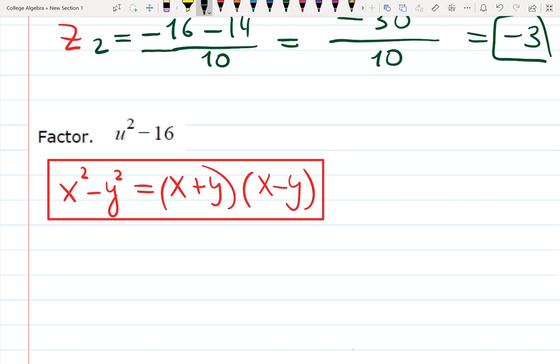So, in this case, instead of x, I have u squared, and instead of y, I have 4 squared. So, it's u squared minus 4 squared. Then, you will write down this as u plus 4 times u minus 4. And that's how fast I factored everything out.